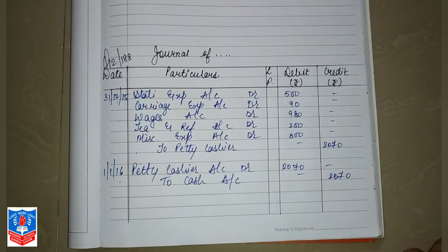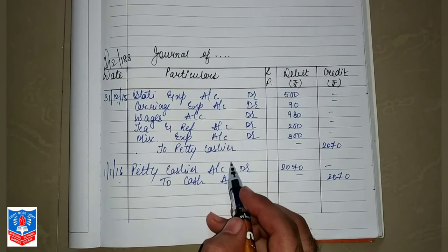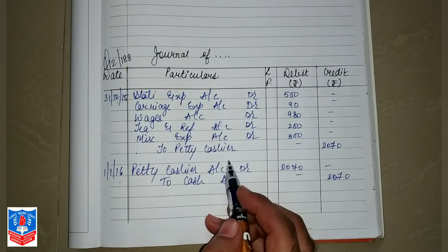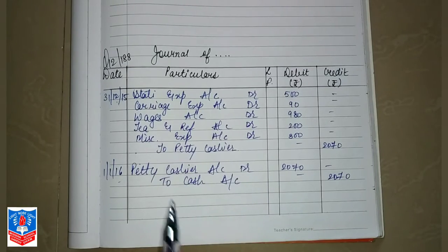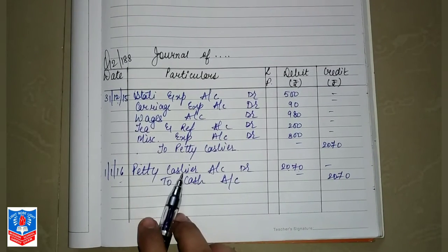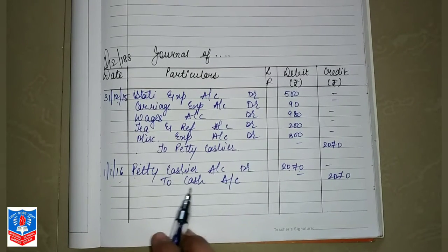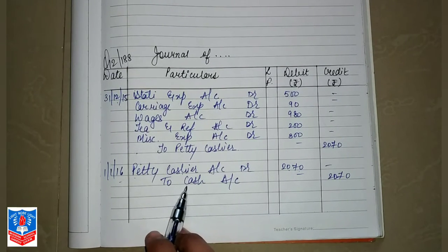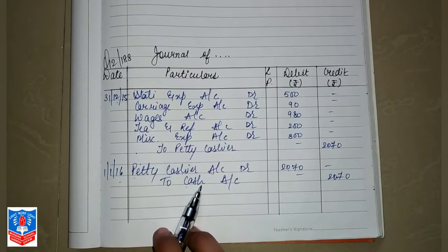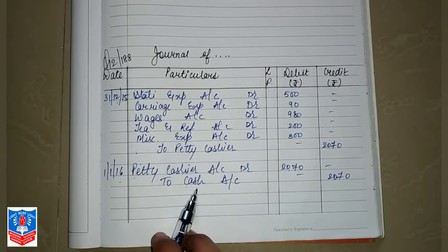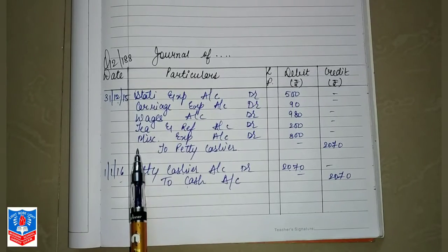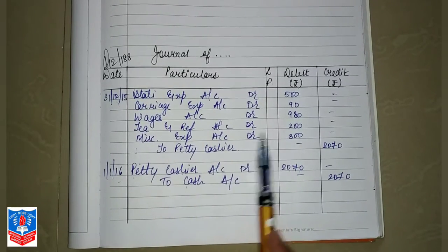Now we are writing in the books of main cashier, that is chief cashier. We assume ourselves as chief cashier. So you will say you have given 2070 to whom? Petty cashier ko diya. So he is the receiver. From you as chief cashier, this much cash is going out. So cash goes out. These are all expenses according to last day balances.